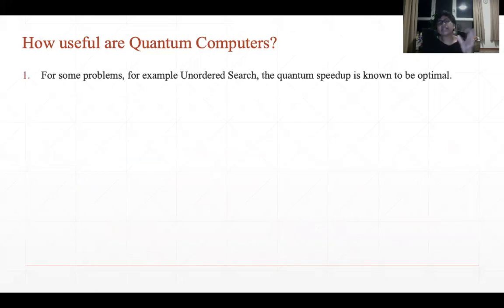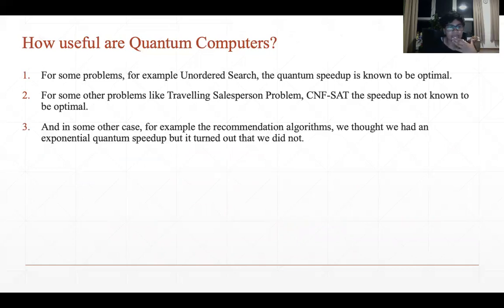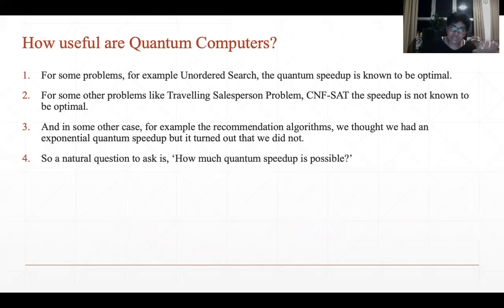The state of the art is not so bad. There are some problems like unordered search where the quantum speedup is known to be optimal. But for some problems like traveling salesman or CNF-SAT, the speedup is not known to be optimal. And in the case of the recommendation algorithm, we thought we had an exponential quantum speedup, but it turned out we did not. So the natural question is: how much quantum speedup is possible, and how do we assert that?